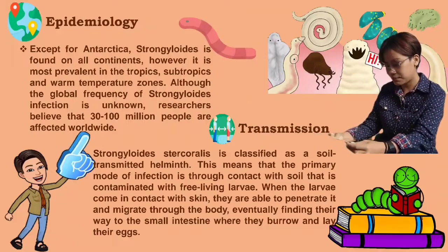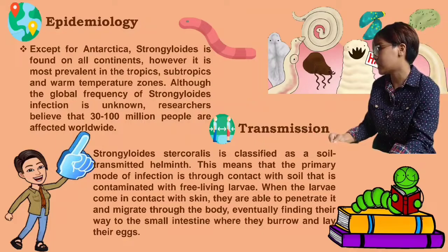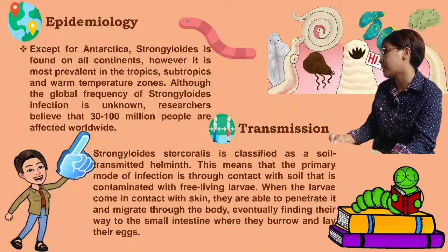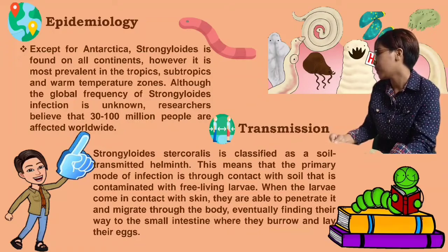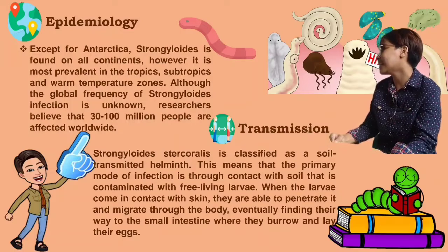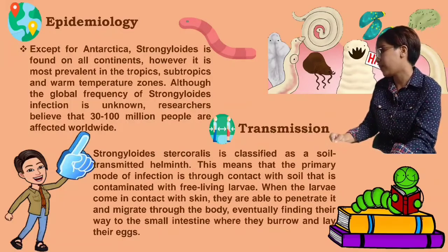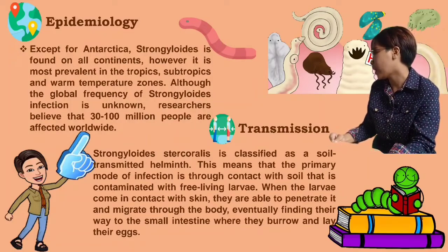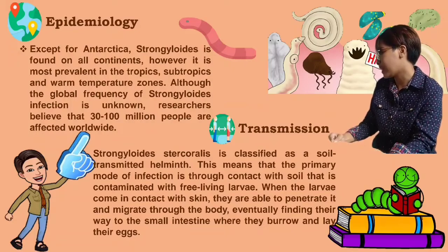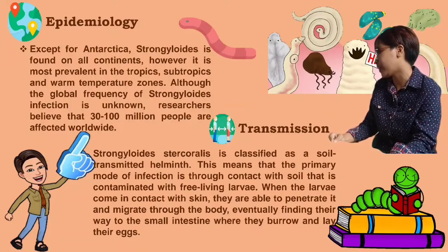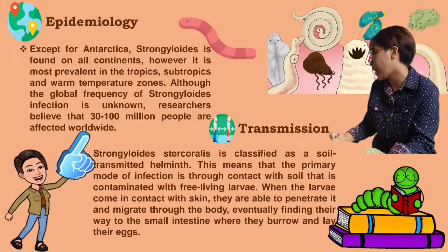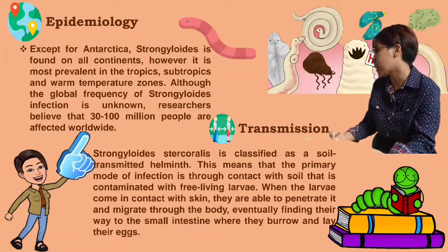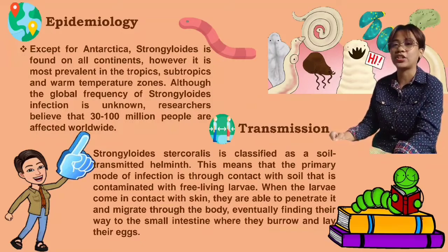For the transmission, Strongyloides stercoralis is classified as a soil-transmitted helminth. This means that the primary mode of infection is through contact with soil that is contaminated with free-living larvae. When the larvae come in contact with skin, they are able to penetrate it and migrate through the body, eventually finding their way to the small intestine where they burrow and lay their eggs.